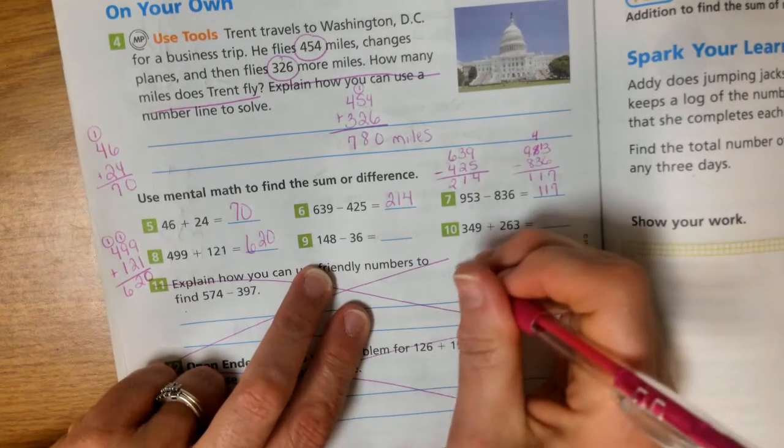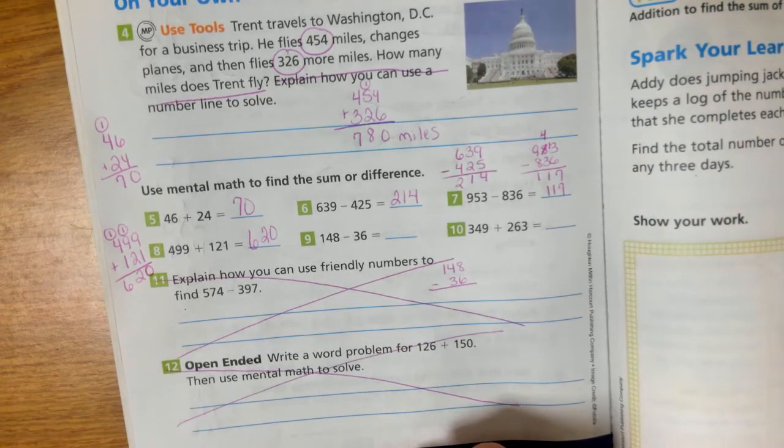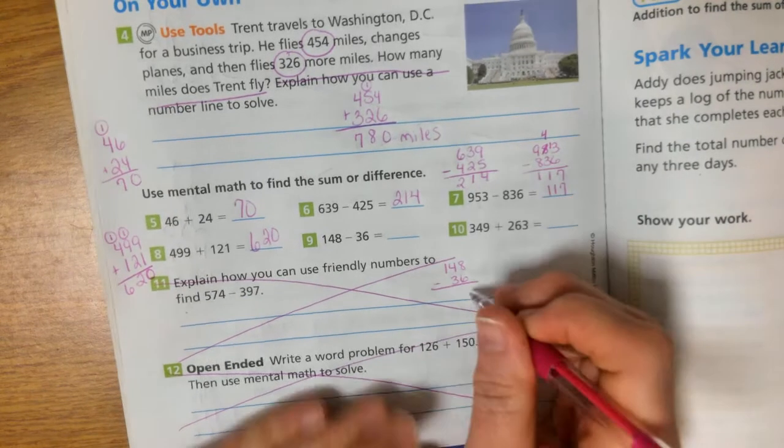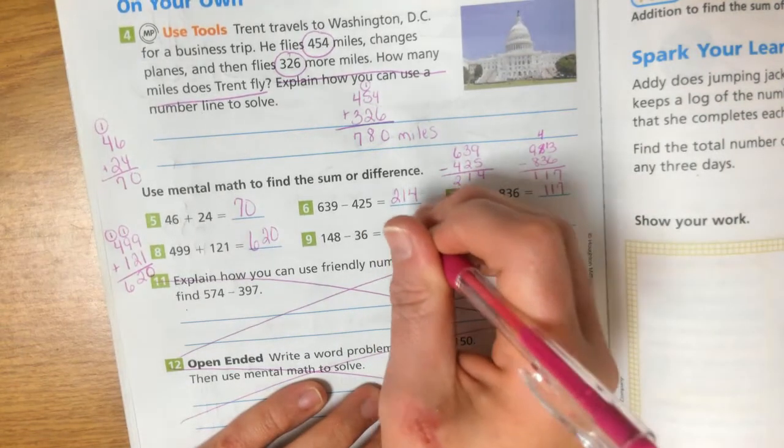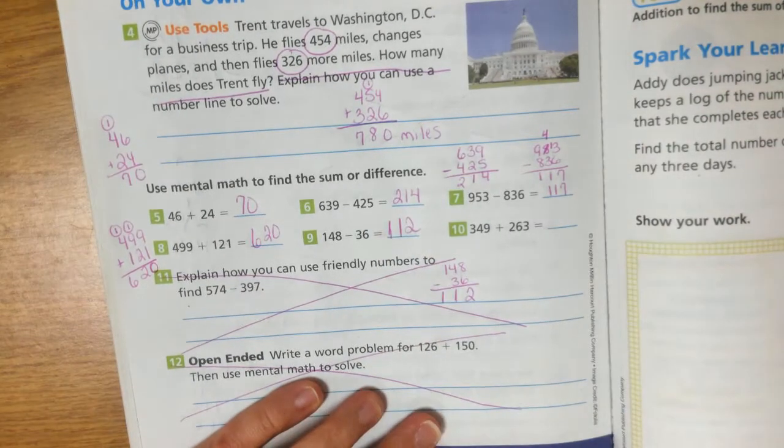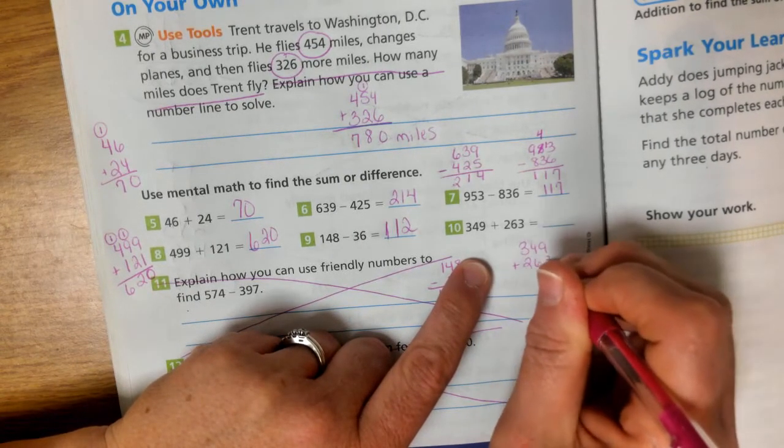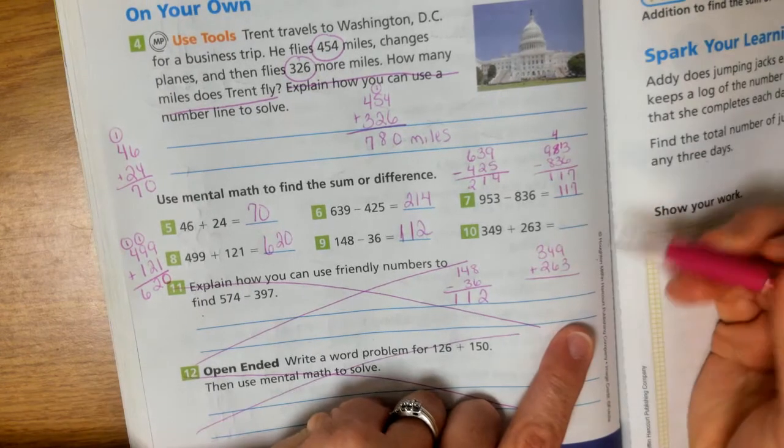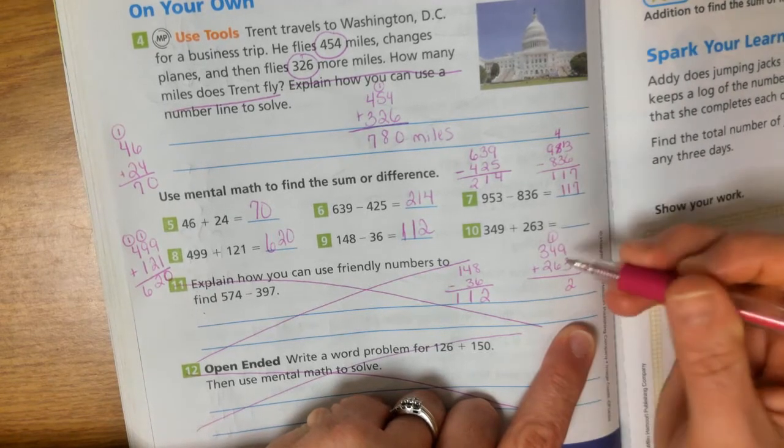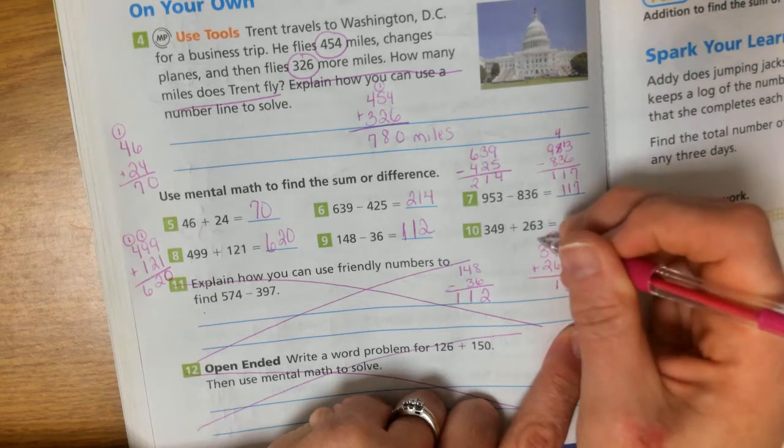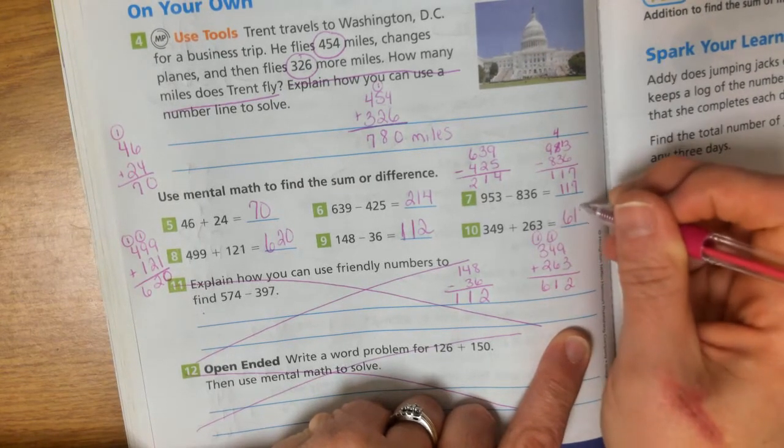Subtraction. 148 minus 36. 8 minus 6 is 2. 4 minus 3 is 1. 1 minus nothing is 1. So 112. And our last one 349 plus 263. 9 plus 3 is 12. Regroup a 1. 4 plus 6 is 10 plus 1 is 11. Regroup a 1. 3 plus 2 is 5 plus 1 is 6. So we have 612.